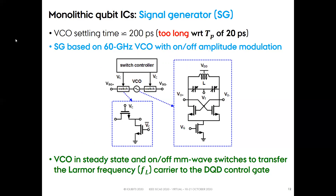For the design of the signal generator, we first explored the possibility to generate the spin manipulation signal by switching on and off the VCO, which we implemented in a cross-coupled differential pair topology. However, our VCO exhibited a settling time of approximately 200 picoseconds, which was too long with respect to the pulse duration TP of 20 picoseconds in the extreme case. So we decided to encapsulate the VCO within two millimeter-wave switches in order to provide on-off amplitude modulation for the frequency carrier generated by the VCO. The final signal must be fed to the control gate of the double quantum dot.